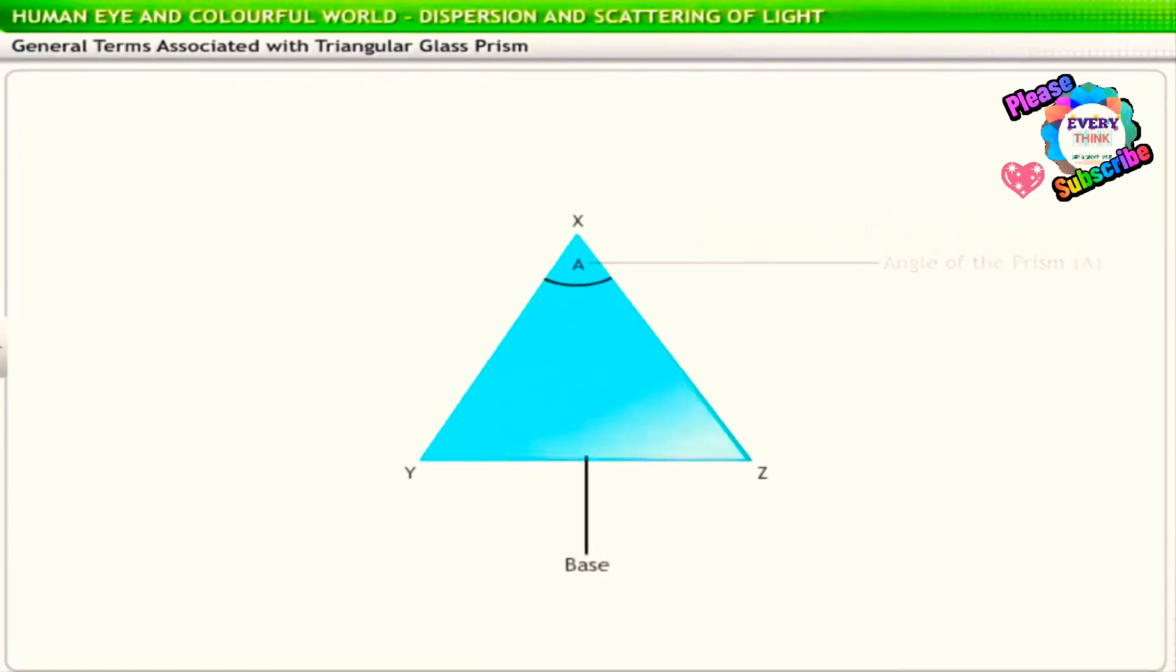The base of the prism is the rectangular face of the prism that does not take part in refracting light.